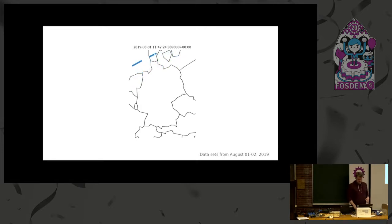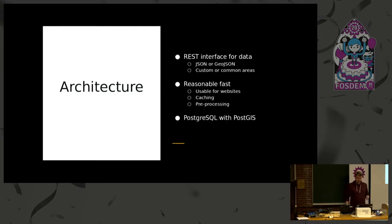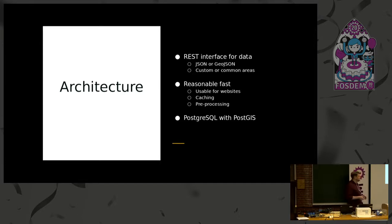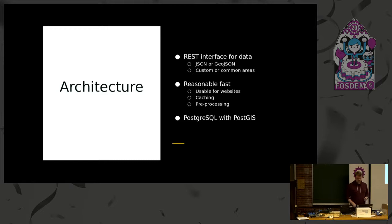Those are some of the important things to consider about the data. On the technical side, our architecture: we download the data from ESA, preprocess it to make it more easily usable, cache it in a Postgres database, and provide a service as a REST interface where you can query by region and by time, and get a JSON in return that you can easily put into your usual JavaScript frameworks for visualization.